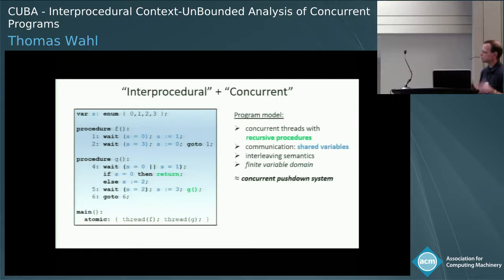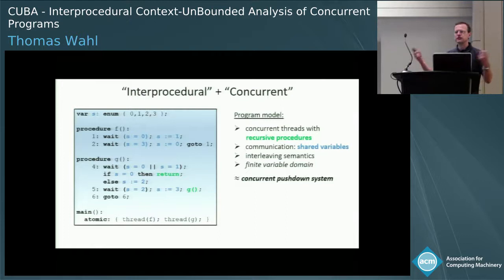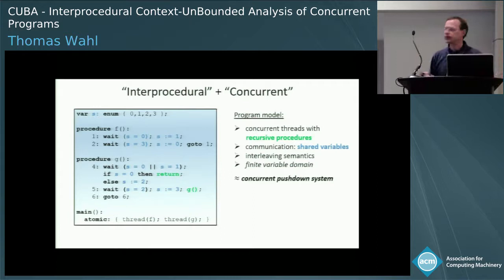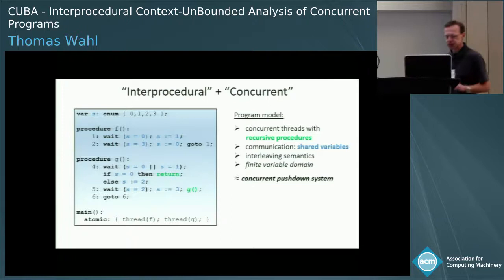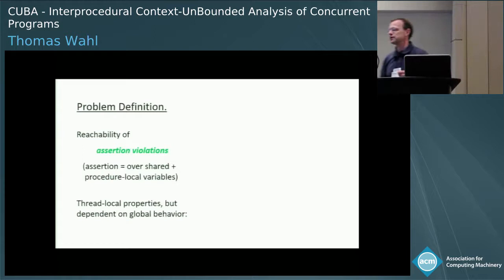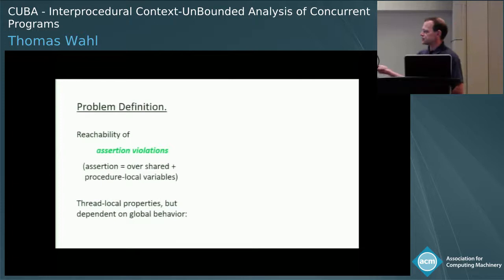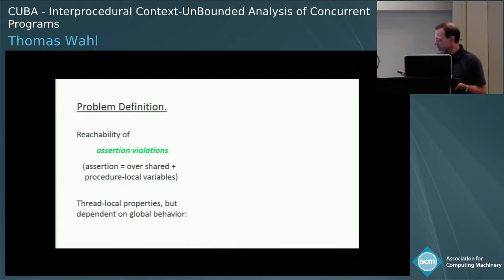Here's a summary of this programming model: we have concurrent threads, recursive procedures, shared variable communication, and strictly interleaving execution semantics — no synchronous execution steps. For this talk, we assume a finite variable domain, like a boolean domain. In that case, these things essentially boil down to concurrent pushdown systems. The problem is reachability of violated assertions — statements over shared variables and the variables at the top of the stack frame, i.e., everything a thread can see.